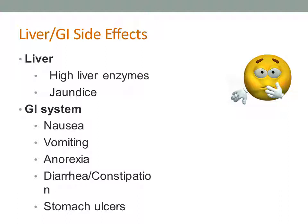The GI system probably suffers the most from medications. Many medications can cause nausea and vomiting — possibly by irritating the stomach, affecting the inner ear, causing dizziness, or slowing intestinal movement making you feel bloated. Many times we can work with these symptoms. Other GI side effects include vomiting, anorexia, diarrhea, constipation, and stomach ulcers.